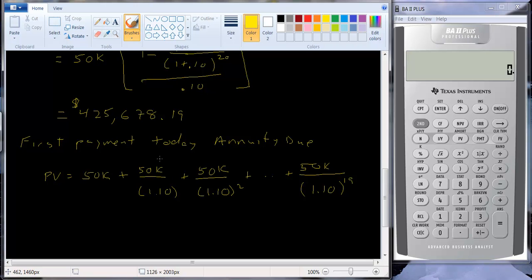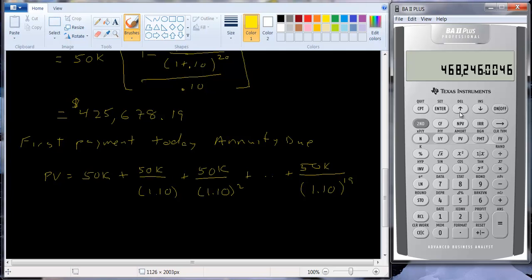So if you think about it, there's a couple of ways we could do this. We could use our time value of money function keys and say 19 periods and then just add the 50,000, right? This looks like an ordinary annuity for 19 periods. So I have all those numbers in here, and all I have to do is change the n from 20 to 19. And I hit compute present value. I'm going to change the sign back to positive. And then I'm going to add 50,000, and I get 468,246. So doing it that way, I get that number.